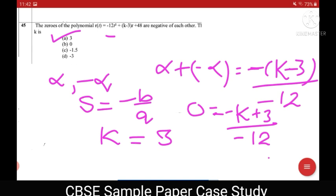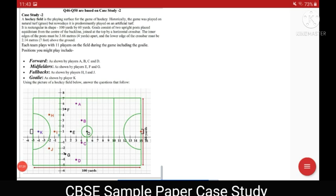I hope you are clear with case study 1. Now let's go to case study 2. Let's first see what the case study 2 is. It shows a hockey field and it is rectangular in shape. The main points are it is 100 yards by 60 yards and the inner edges of the post must be 3.66 meters that is 4 yards apart and lower edge must be 2.14 meter that is 7 feet above the ground. Each team has 11 players. We are given forward players shown by A, B, C and D. Midfielders by E, F and G. Full backs by H, I and J and goalie by player K.